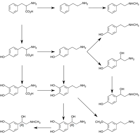Catecholamines cause general physiological changes that prepare the body for physical activity. Typical effects include increases in heart rate, blood pressure, and blood glucose levels, and a general reaction of the sympathetic nervous system. Some drugs, like tolcapone, raise the levels of all catecholamines. Catecholamine is secreted into urine after being broken down, and its secretion level can be measured for diagnosis of associated illnesses; urine testing for catecholamines is used to detect pheochromocytoma.